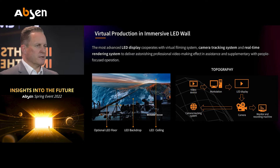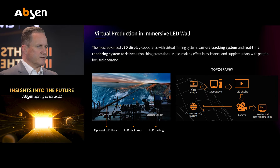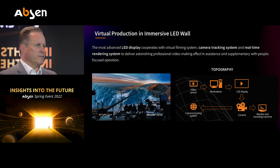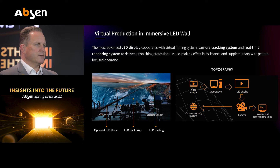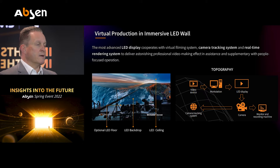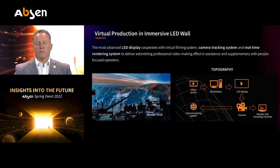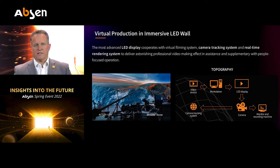Virtual production — what is it for? First of all, it's to replace green screens in movie productions, as an example, so that you get an impression of the surrounding in real time and in real-time rendering, which is needed for that.